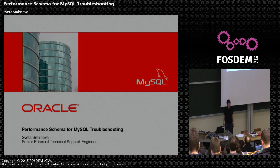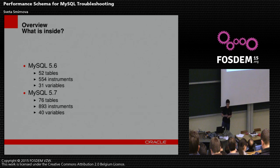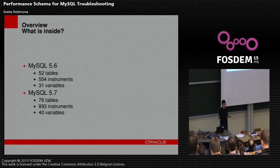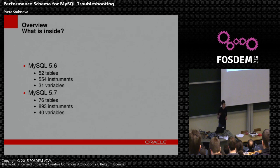One of these tools is Performance Schema, which is a great tool we will discuss today. Looking at this slide, you may think it's not a simple easy tool — it has 52 tables in 5.6, 554 instruments, and 31 variables just to tune it. In 5.7 it's even more. But Performance Schema is very structured, and the table names are grouped by things which they help to troubleshoot. Once you understand what you can do with Performance Schema, you can easily just query it — like show tables or query information schema about it — and find out what it does and how to write effective queries for it.